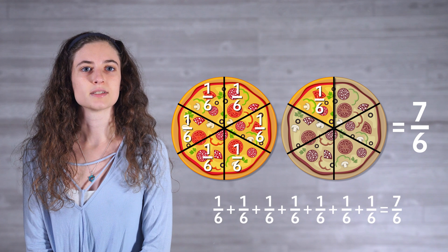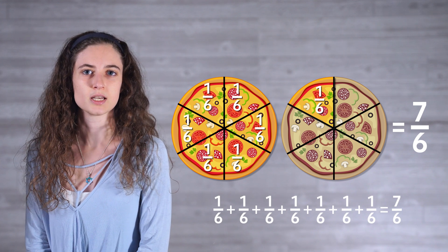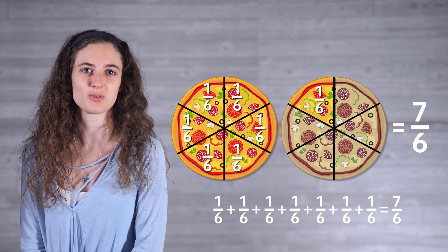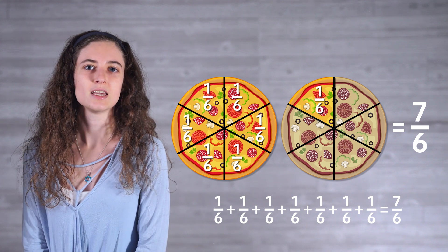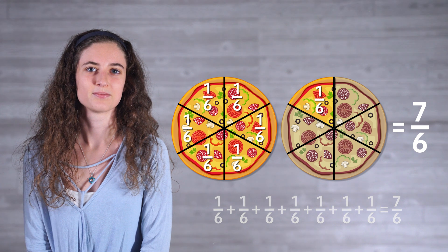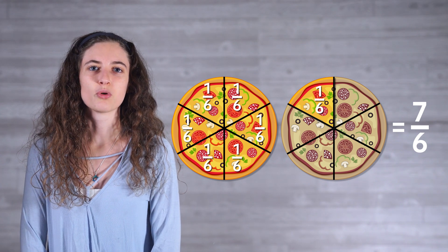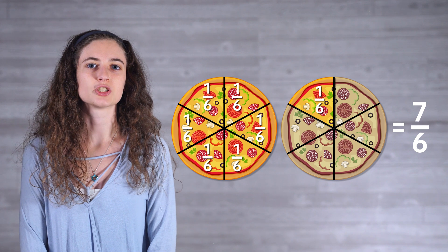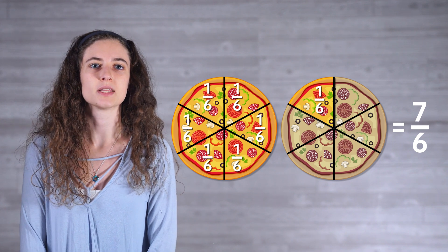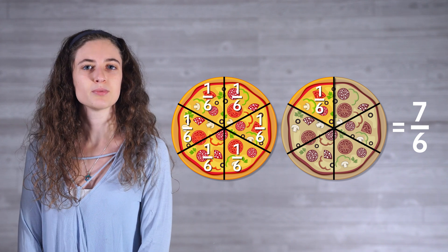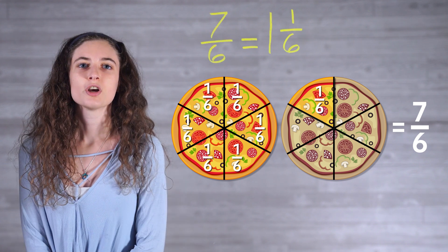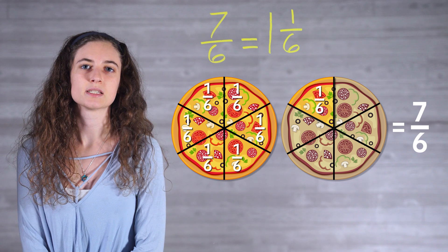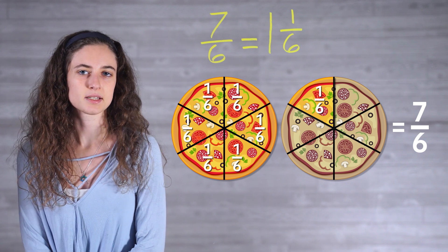One whole pizza would be represented by 6/6, or 6 sixths. 7/6 represents 7 sixths, which is more than one pizza. This can be visualized as 1/6 + 1/6 + 1/6 + 1/6 + 1/6 + 1/6 + 1/6 = 7/6. It can also be written in another form called a mixed number. For example, the improper fraction 7/6 could also be written as the mixed number 1 and 1/6.